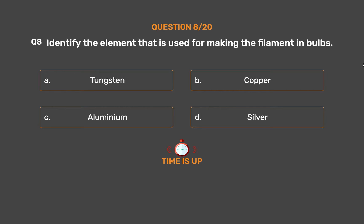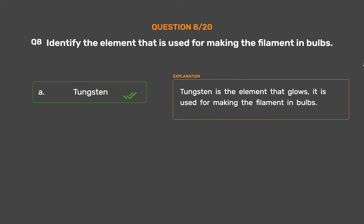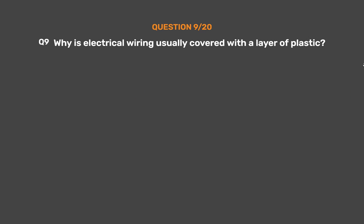The correct answer is Option A: Tungsten. Tungsten is the element that glows and is used for making the filament in bulbs.